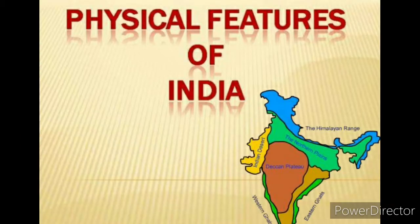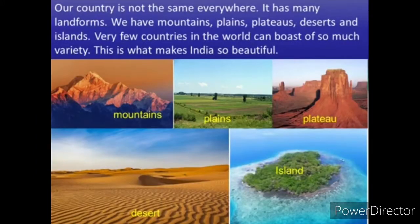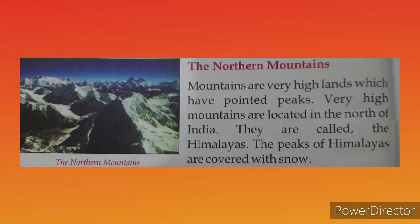India is very big and its surface is not the same everywhere. Some parts have mountains while some are full of sand. The main physical features of India are: the northern mountains, northern plains, Deccan Plateau, the coastal areas, the desert, and the islands.